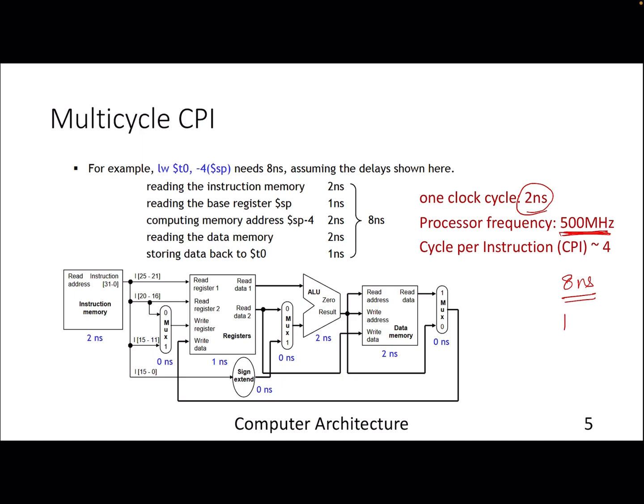Which is pretty low in terms of the frequency—kind of four times lower than this particular value. So with this, what we are getting is cycles per instruction of four. We have improved our processor frequency; we are using a better, faster processor now because the clock cycle time has improved.